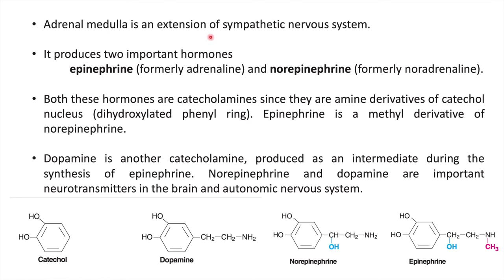The adrenal medulla is an extension of the sympathetic nervous system and releases epinephrine and norepinephrine. Epinephrine was earlier known as adrenaline and norepinephrine as noradrenaline. Both epinephrine and norepinephrine contain a catechol moiety and an ethylamine portion in their structure. Norepinephrine has a hydroxyl group at the beta carbon, while epinephrine has a methyl group at the amine portion. Norepinephrine and dopamine are also important neurotransmitters in the brain.